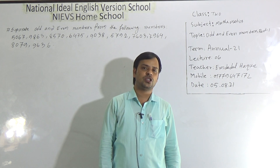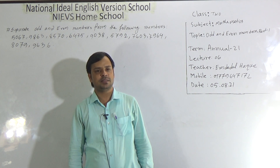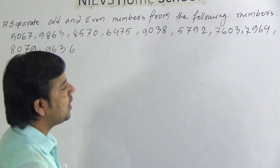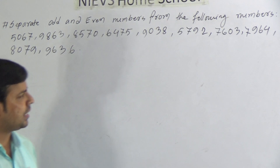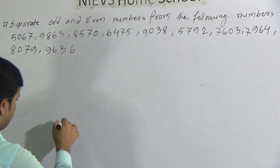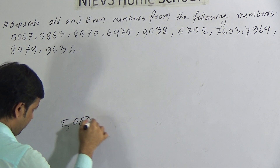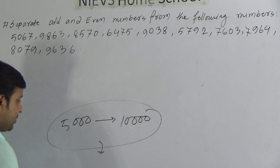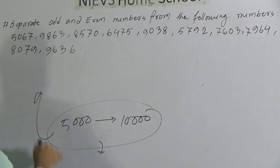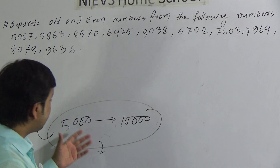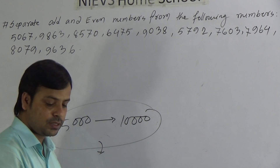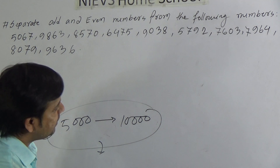Today I am going to conduct math class of class 2. Our today's topic is odd and even numbers, part 1. In this part I have written 10 numbers and I will show you how to separate the odd and even numbers from these numbers. I have written all the numbers from 5000 to 10,000, as included in your short syllabus.